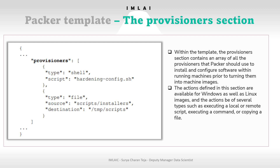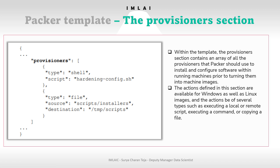The provisioner section you can see on screen is optional and it contains a list of scripts. For example, here we have hardening-config.sh and another script — a list of scripts that will be executed by Packer on a temporary VM base image in order to build a custom VM image according to our needs. We are going to do an exercise on this.